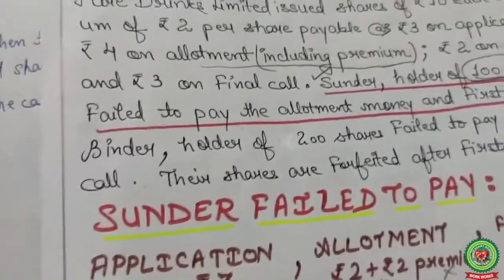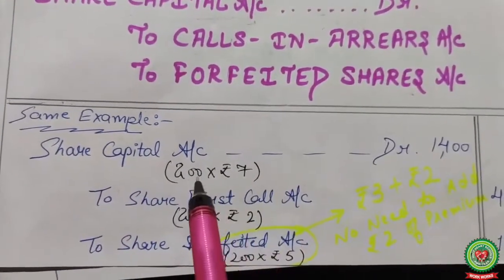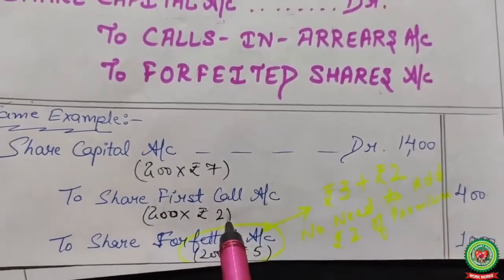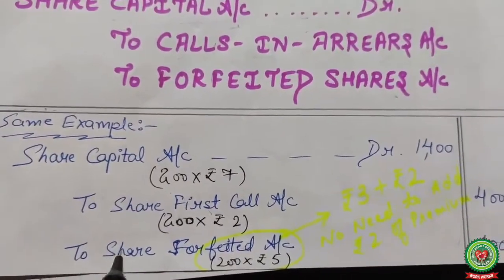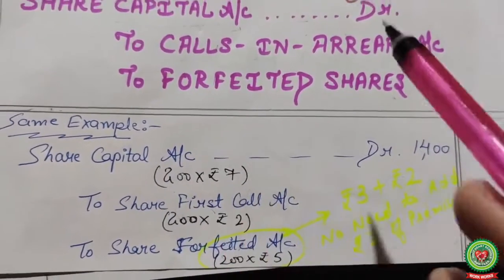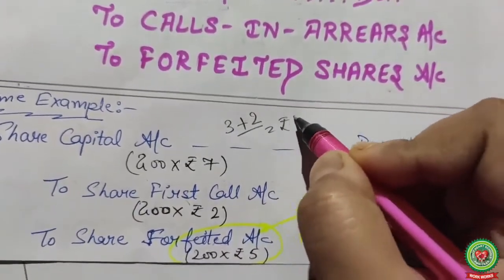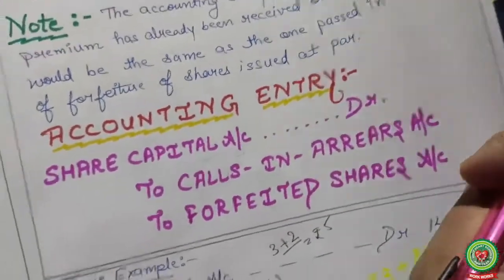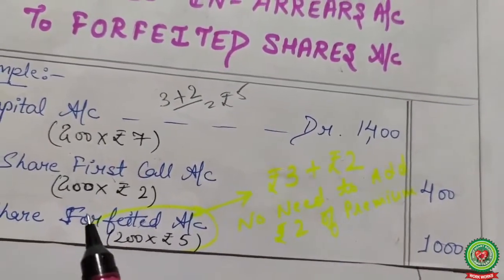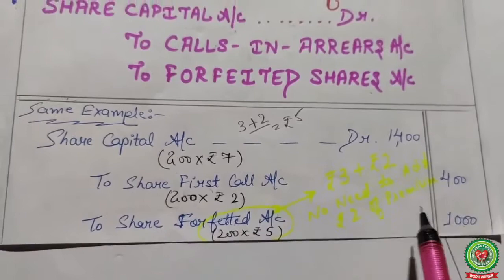Solution for Binder (holder of 200 shares, forfeited after first call): Share Capital Account debited — 200 × rupees 7 = rupees 1,400. Calls in Arrears — Share First Call Account: 200 × rupees 2 = rupees 400. Share Forfeited Account — amount received: 200 × rupees 5 (rupees 3 application + rupees 2 allotment) = rupees 1,000. No need to add the premium of rupees 2 here as it was already received and credited to the Security Premium Reserve Account separately.